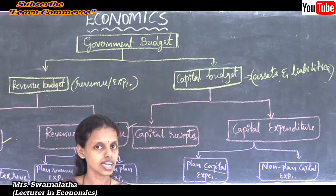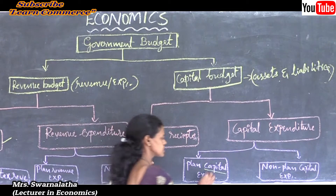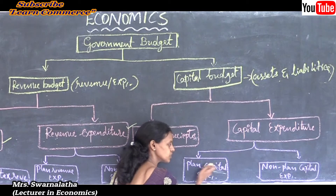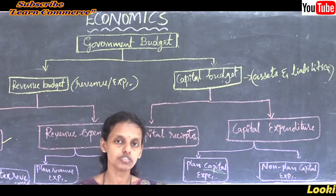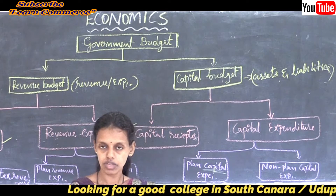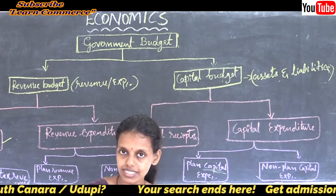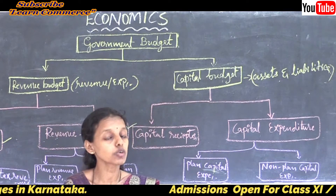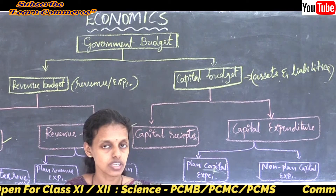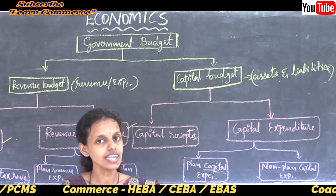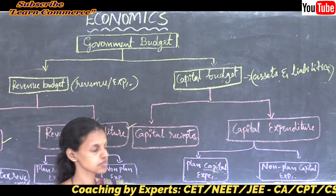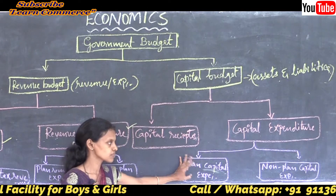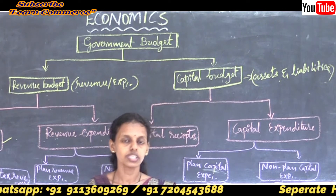Planned capital expenditure means for the next year this many buildings should be constructed for public purposes — whether a library is required for a village or a public hospital is required. They make plans and arrange capital equipment, construct buildings, and provide tools and machinery required for production. All of this is kept in the government budget for future purposes with proper planning.